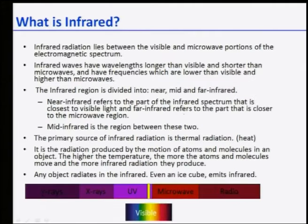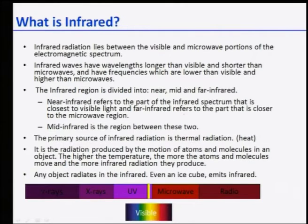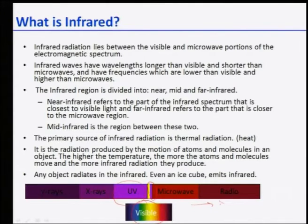Infrared radiation lies between the visible and microwave portions of the electromagnetic spectrum. In the first class, I showed you the full electromagnetic spectrum from X-rays and gamma rays to radio waves, with visible in the middle. Infrared comes between visible and microwave. Wavelength increases and frequency decreases as you go from UV toward microwave and radio.